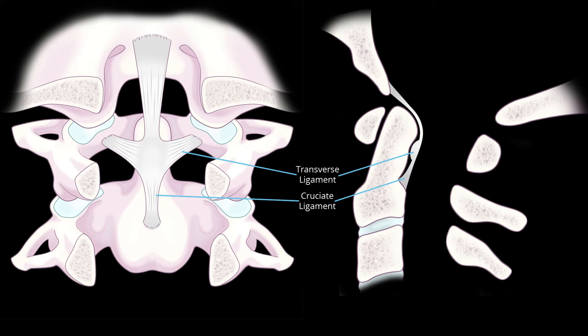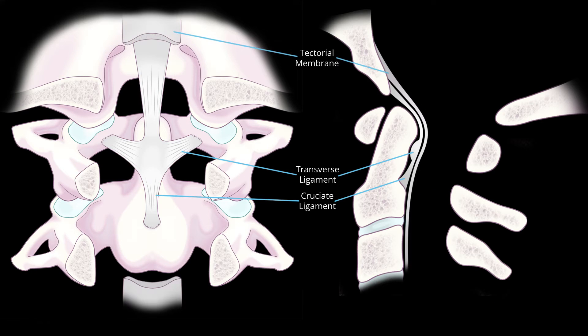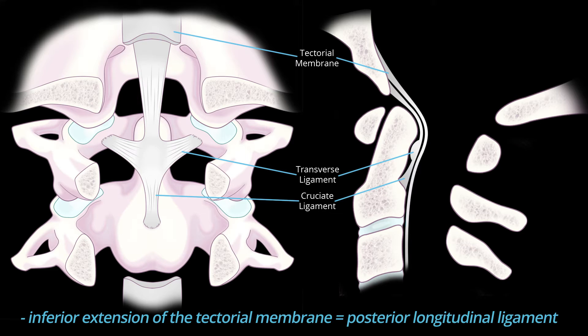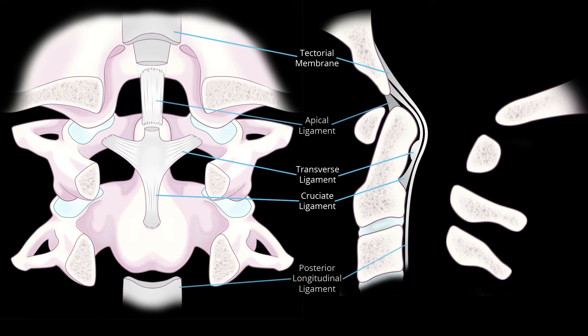Just posterior to the cruciate ligament is the tectorial membrane. The more inferior extension of the tectorial membrane is referred to as the posterior longitudinal ligament. The apical ligament connects the tip of the dens to the basion. The basion forms the anterior margin of the foramen magnum.